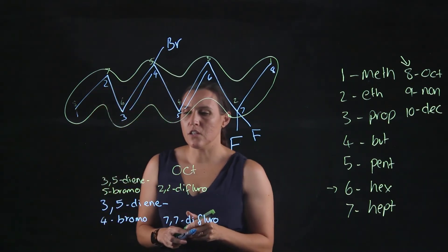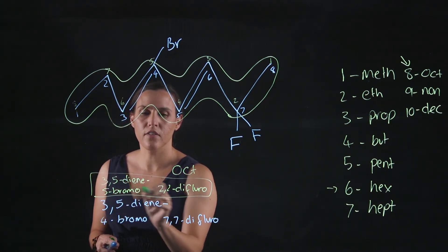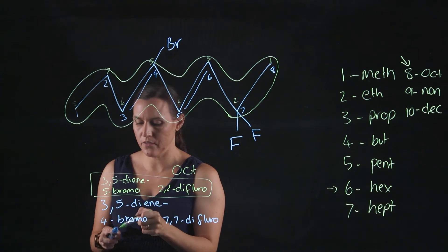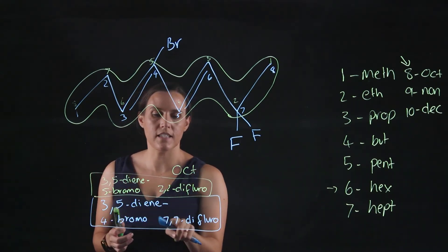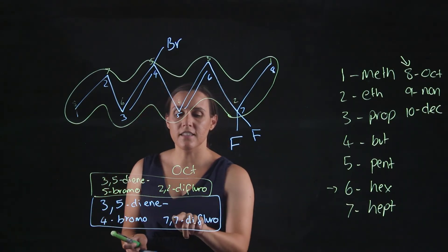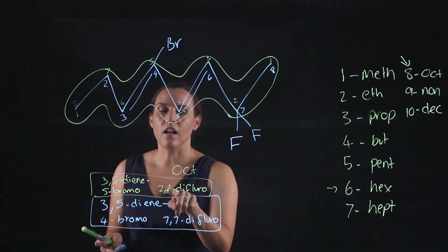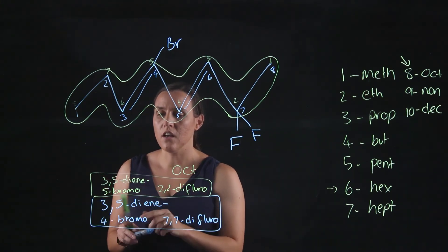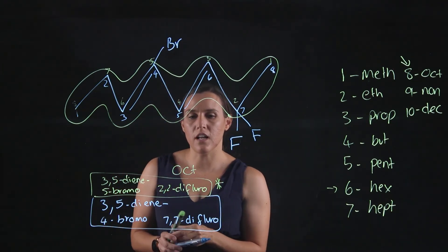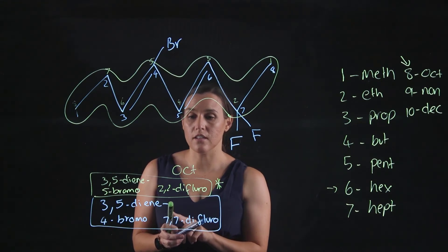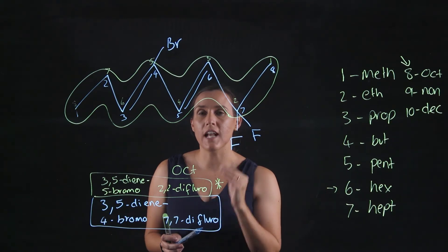So there are my two options. When I'm looking at these, in the blue numbering I've got positions three, five, four, seven, and seven. In the green numbering I've got three, five, two, two, and five. If I add seven plus seven plus four versus two plus two plus five, you get a smaller sum with the green numbering, so that would be the correct way of naming this compound.